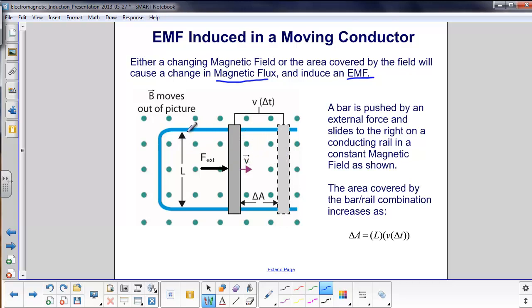So let's look at this picture. We have a loop of wire here. We have a stationary magnetic field. And we have this little bar here, this little metal conducting bar. And what we're going to do is push it with an external force, and it's going to move in this direction with a velocity V.